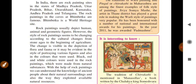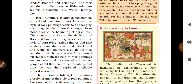Rock paintings usually depict human figures, animals, and geometric figures. However, the style of rock painting seems to be changing according to cultural changes from the Stone Age to the beginning of agriculture — changes visible in the depiction of flora and fauna. These changes are also evident in the style of portraying various figures and in the colors used: black, red, and white were used in rock paintings. So if an MCQ asks which color is NOT used in rock painting and gives a fourth option like green, you should be able to differentiate — these are called HOT (Higher Order Thinking) questions.